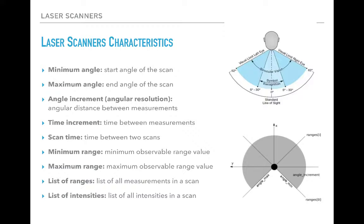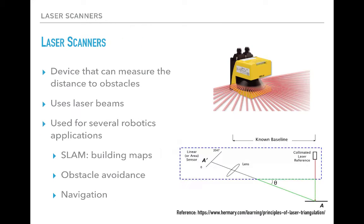For any laser scanner, these are the main characteristics you need to figure out before selecting it for your application. First, a laser scanner is characterized by a minimum angle and a maximum angle — this is how a laser scanner would look like. It sends a beam of laser over a certain angle, between the minimum and maximum angle, which represents the field of view. Different lasers have different fields of view, and this impacts their cost and performance.